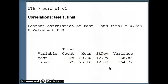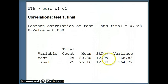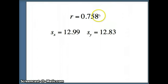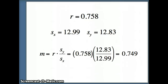We also ask Minitab to give us the descriptive statistics, focusing on the mean, standard deviation, and variance. The standard deviation for test one is 12.99, and the standard deviation for the final is 12.83. So 12.99 will be s-sub-x and 12.83 will be s-sub-y. Now we have our correlation coefficient r, s-sub-x, and s-sub-y. The slope m equals r times s-sub-y divided by s-sub-x.